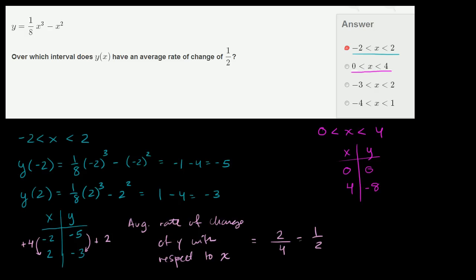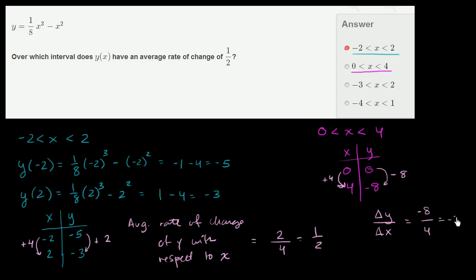So in this one, when x is increasing by 4, y has decreased by 8. So the average rate of change of y with respect to x: my change in y — delta just literally is shorthand for change in — my change in y is negative 8 when my change in x is 4. So the average rate of change here is negative 2. It's negative because as x increased, y decreased — on average, for every one that x increased, y decreased by 2. So the average rate of change is clearly not 1/2, which confirms that is not the answer. And I encourage you to try the other two intervals, which will also give you an average rate of change other than positive 1/2.